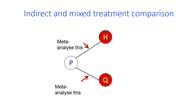The method is based on the simultaneous synthesis of direct evidence, which comes from studies directly randomizing treatments of interest, and indirect evidence, which comes from studies comparing treatments of interest with a common comparator. The concept of indirect comparison is central to network meta-analysis.